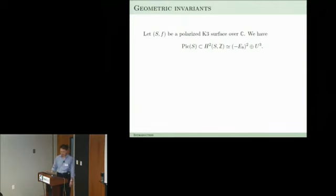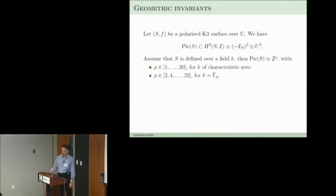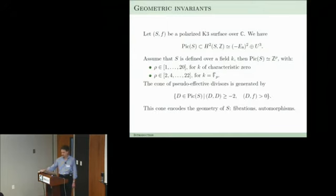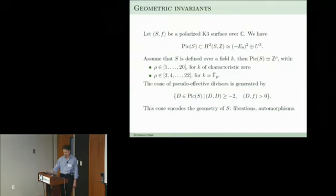First of all we need to know about some geometric invariants: the Picard group, its intersection pairing, and the rank of that group, which is from 1 to 20 if you work over fields of characteristic 0. Over the algebraic closure of Fp you could get up to 22. Essential for geometry is the cone of effective curves or ample divisors — for K3 surfaces it consists of all classes that intersect positively with fixed polarizations and have square greater than or equal to minus 2.